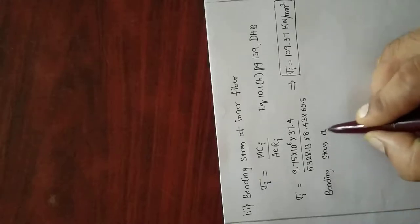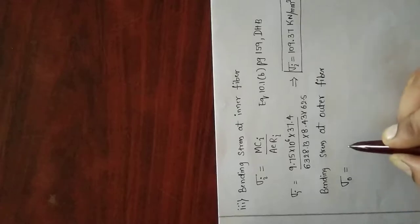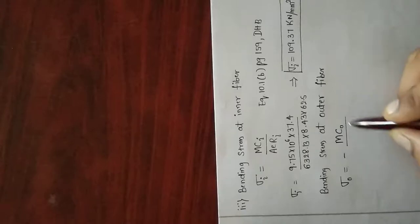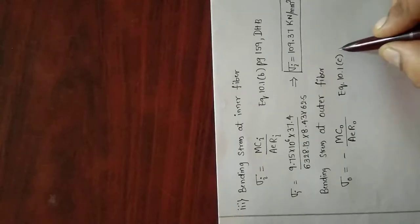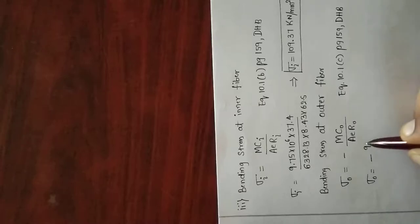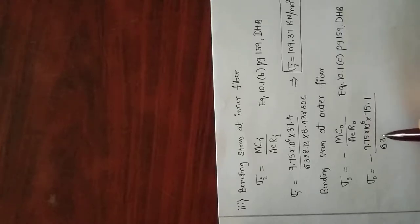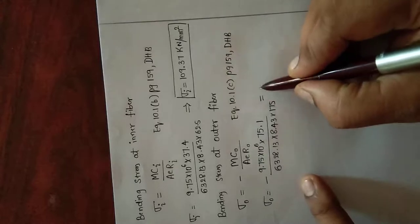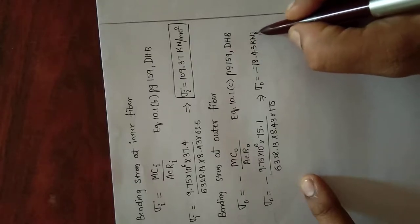Bending stress at outer fiber: sigma-naught equals minus M·c-naught / (A·e·r-naught) — negative sign because it is compression. From equation 10.1c, page 159, data handbook. Substituting: minus 9.75 times 10 to the power 6, times 75.1, whole divided by 6328.13 times 8.43 times 175. I got sigma-naught equal to minus 78.43 N/mm square.